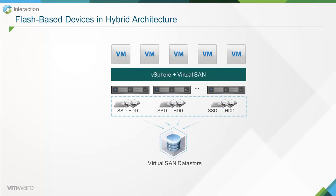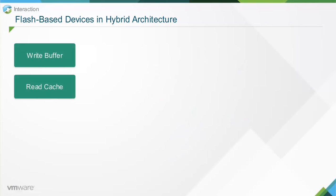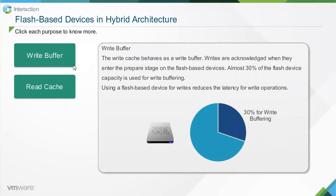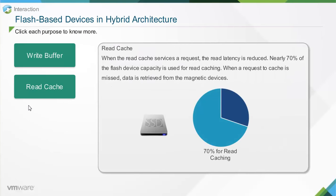In Virtual SAN hybrid architecture, all read and write operations go directly to the flash tier. Flash-based devices are primarily used for two purposes: write buffer and read cache. The write cache behaves as a write buffer — writes are acknowledged when they enter the prepare stage on the flash-based devices. Almost 30% of flash device capacity is used for write buffering, which reduces write operation latency. Nearly 70% of flash device capacity is used for read caching. When a read cache request is missed, data is retrieved from the magnetic devices.